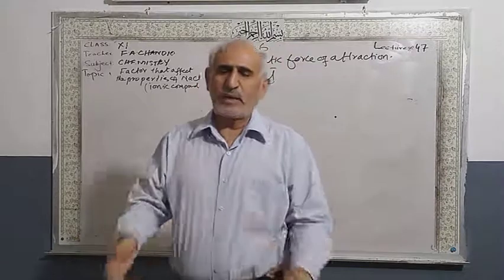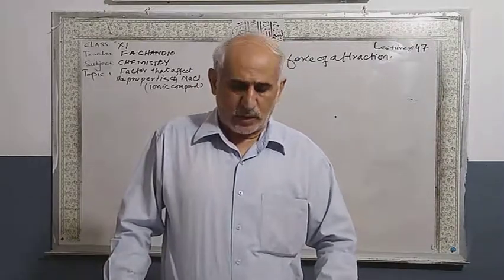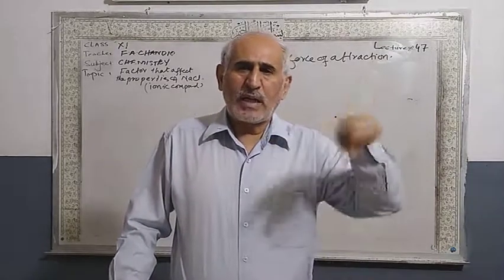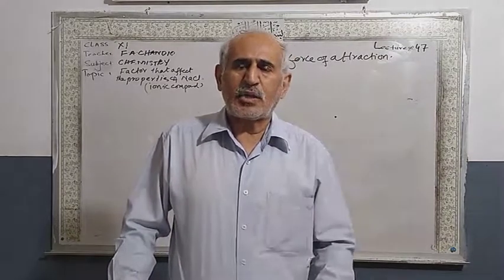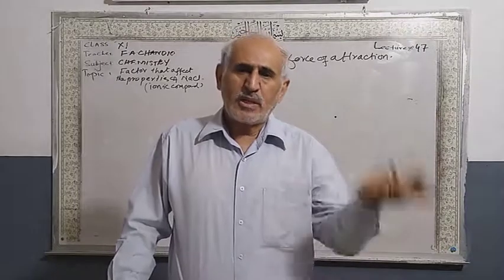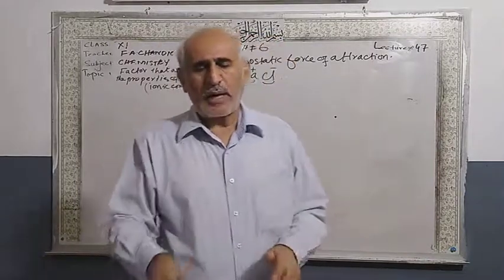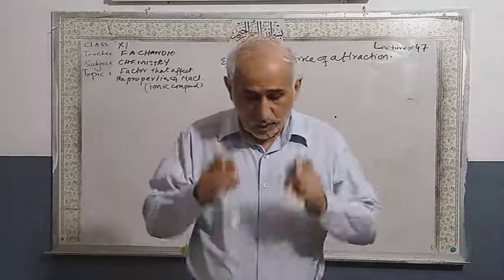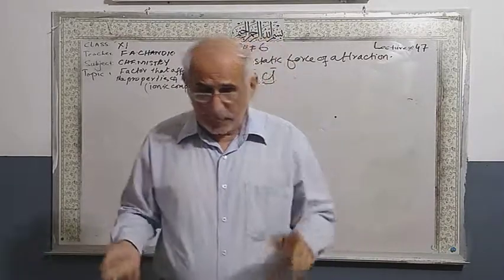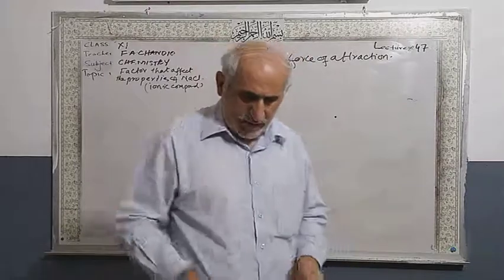The coordination number: the number of chloride ions surrounding a sodium ion is 6, and the same number of sodium ions (6) surrounding chloride ions is also 6. This is called the coordination number. Another factor is called the radius ratio.